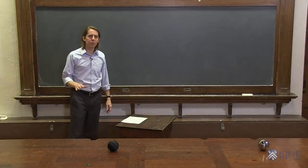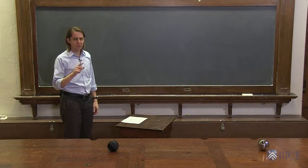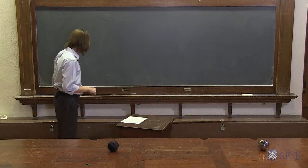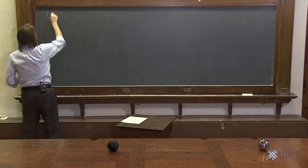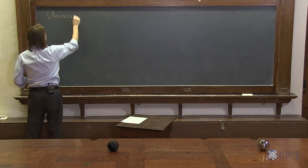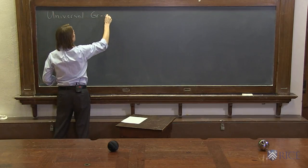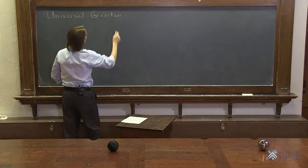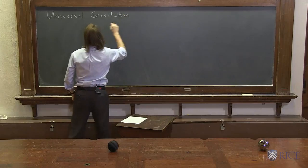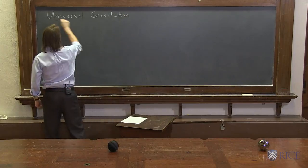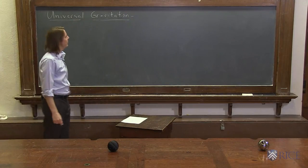We have talked about the gravitational force near the surface of the Earth: F equals mg, where g is 9.81 meters per second squared. But now we're going to talk about what is sometimes referred to as universal gravitation, which really just means the more general description of gravitation — or you could say the gravity that holds the universe together.